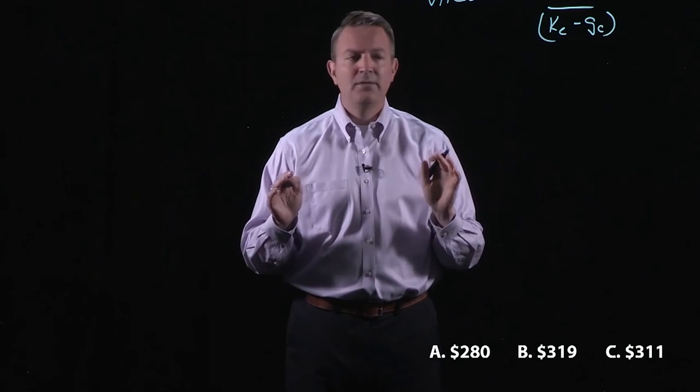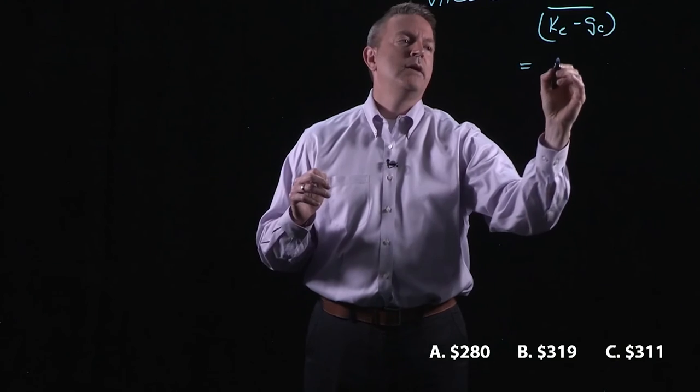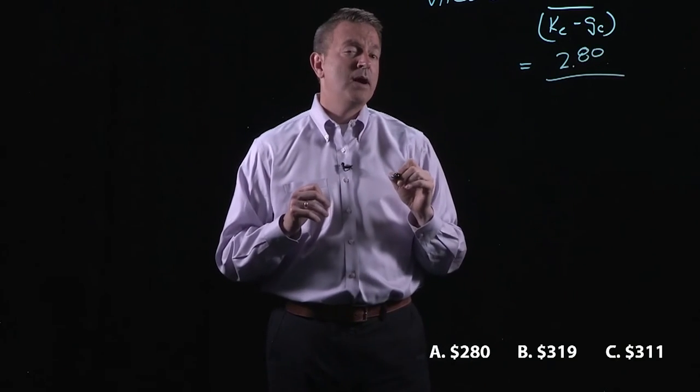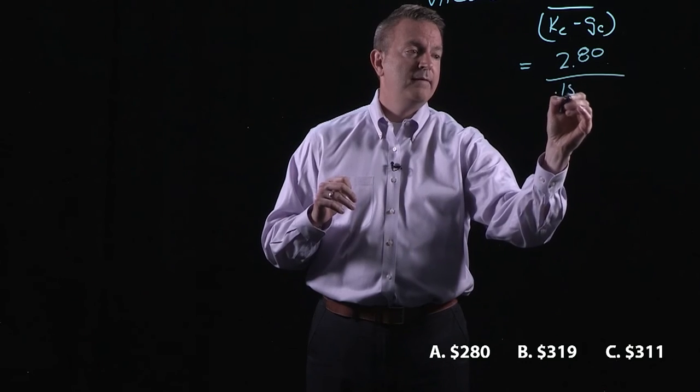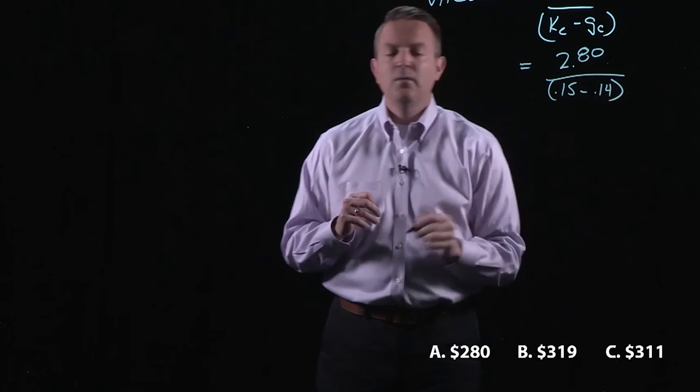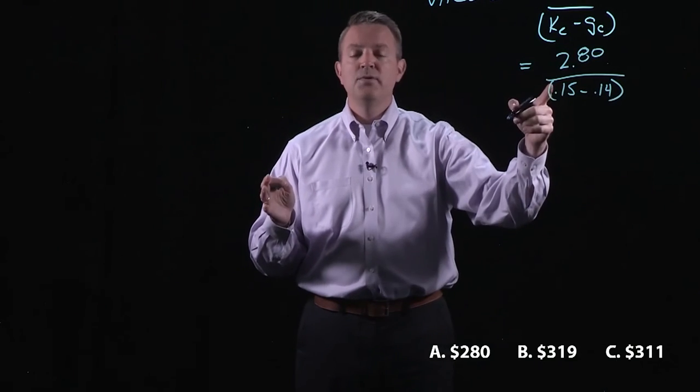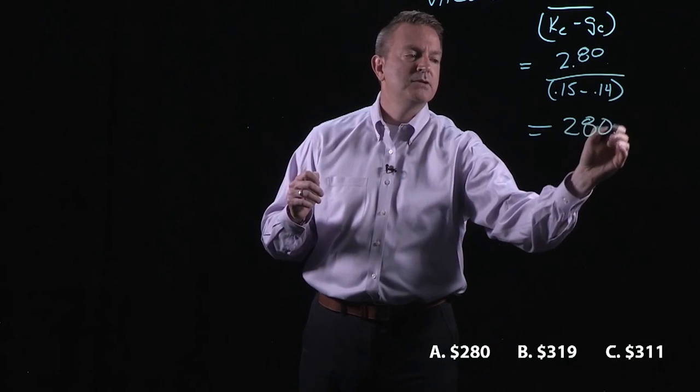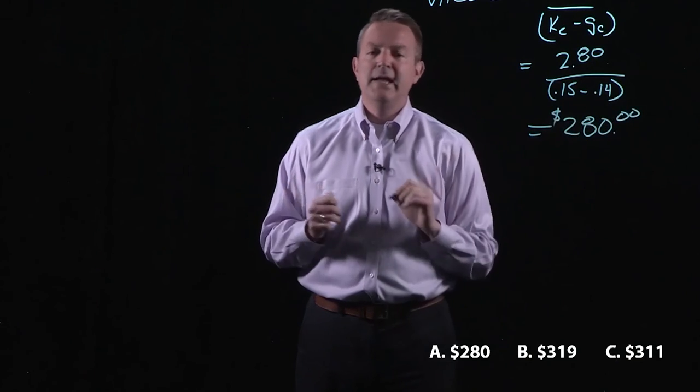So do we have the information that we need? Absolutely. We know that the upcoming dividend is $2.80. We know the required rate of return was that 15%. We subtract out the growth rate. When we put all this stuff together, the 2.8 over 0.01, we know that this thing is going to turn into $280.